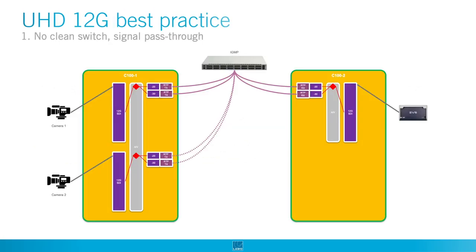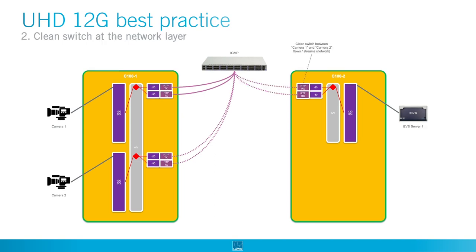Let's have a look at some 12G best practice examples. We have two cameras with 4K 12G that have been converted and transmitted by the C100. The 12G goes via the internal AV crossbar to the 2110-20 and 2110-30 TX. The receiver will send an IGMP join to the switch, and the switch will forward the stream from the TX to the RX. The RX will receive the dash 20 for video and the dash 30 for audio. Via the internal AV crossbar we have a 12G signal that we can send to the EVA server. As the current C100 supports 3x12G with a 40G connection, it might be a better approach to do clean switching on the internal crossbar.